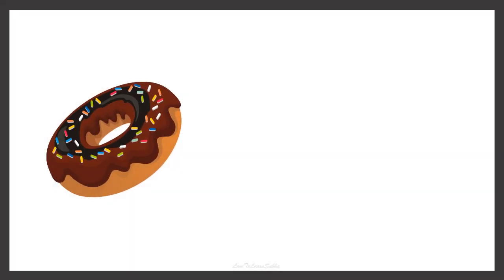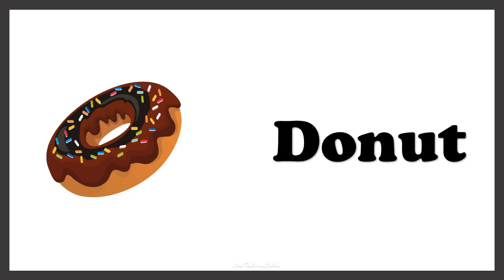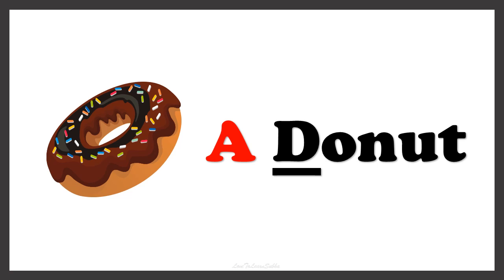Here we have DONUT. Now can you guess what article comes in front of the word DONUT? Let's check out the first letter of the word. DONUT starts with the consonant D. So whenever a word starts with a consonant, we use A. So this is A DONUT.